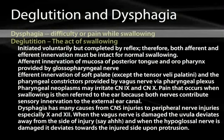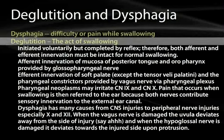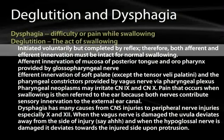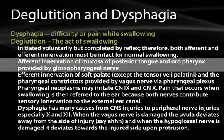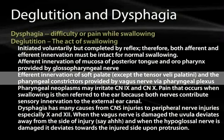Let's talk about deglutition and dysphagia. Dysphagia is difficulty or pain while swallowing, and deglutition is the act of swallowing. It's initiated voluntarily but completed by reflex; therefore, both afferent and efferent innervation must be intact for normal swallowing to occur. The afferent innervation of the mucosa, posterior tongue, and oropharynx comes from the glossopharyngeal nerve. The efferent innervation to the soft palate is carried by the vagus nerve.